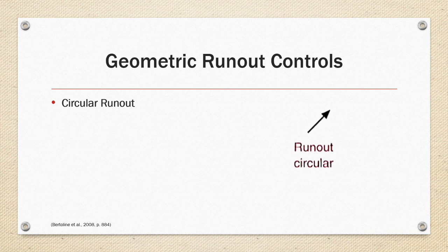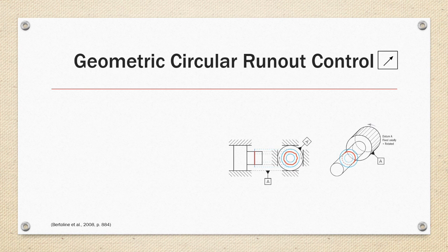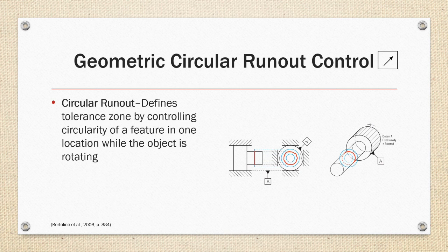Runout controls are circular runout and total runout. Circular runout defines a tolerance zone by controlling circularity of a feature in one location while the object is rotating. As shown on the right, there's a circumference that is measured as the part's rotating, and the part must fall within the tolerance zone defined by the blue circles.